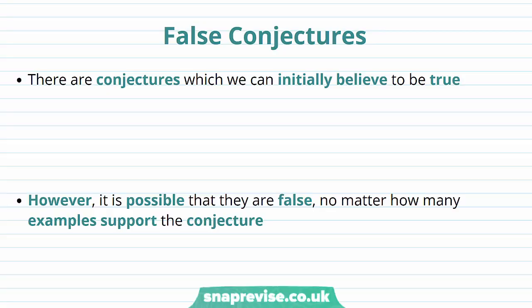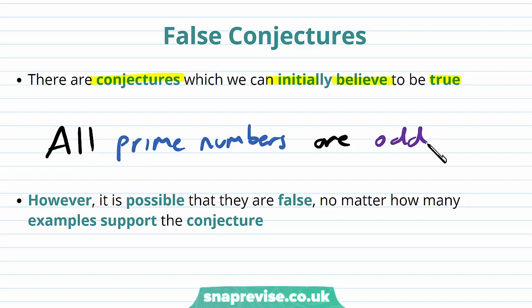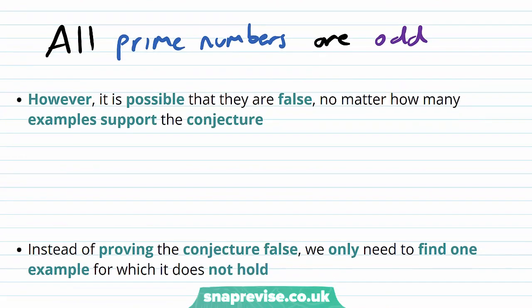So how can we disprove false conjectures? There are conjectures which we can initially believe to be true. Consider the conjecture: all prime numbers are odd. It is possible that they are false, no matter how many examples support the conjecture. Consider the odd prime numbers 3, 5, 7, 11, and so on.